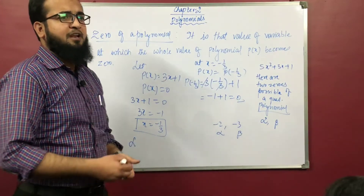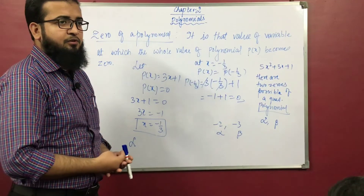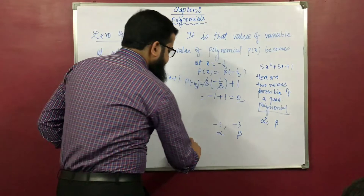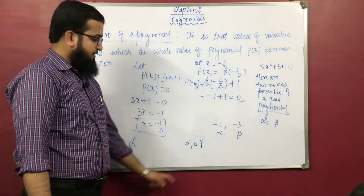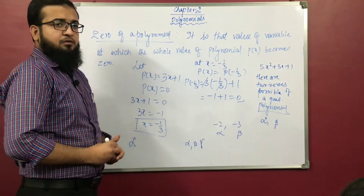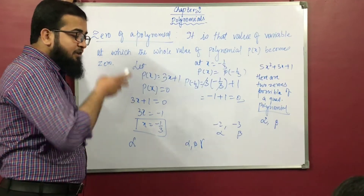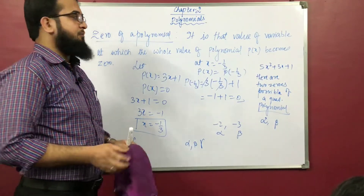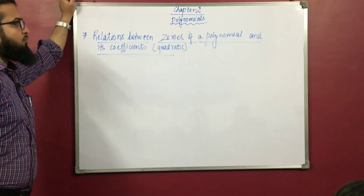A cubic polynomial will have three zeros — meaning three values of x at which the polynomial becomes 0. We denote one zero as alpha, another as beta, and the third as gamma. Alpha, beta, and gamma are three different symbols for three different values. This is the basic introduction of zeros of polynomials. Now, there is a relation between the zeros of polynomials and the coefficients of polynomials.